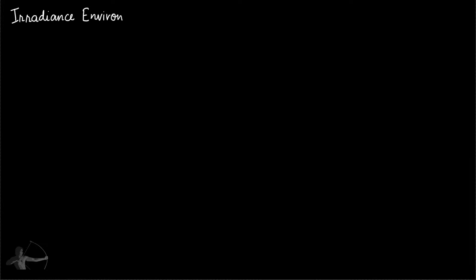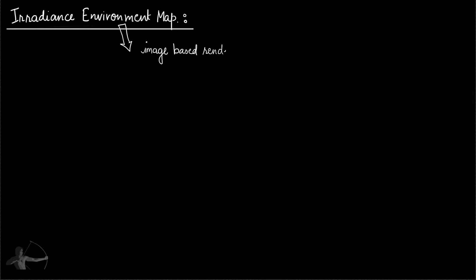Hello everybody. In this chapter we will learn what irradiance environment maps are, how they are calculated, and how they are used in scenes. A few things to understand before we take a deeper dive: whenever we see any technique that involves an environment map, it means it's an image based rendering or image based lighting technique. We will also understand what irradiance is, and in order to do that, we will first understand radiance.